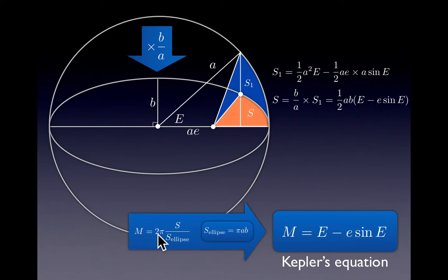Now if we use the definition of the mean anomaly, which is 2π times this area divided by the area of the ellipse, and we use the fact that the area of the ellipse is πab—to see this, we start with a circle which has an area of πa² and multiply it by b over a to get this area—when we use this we get Kepler's equation.